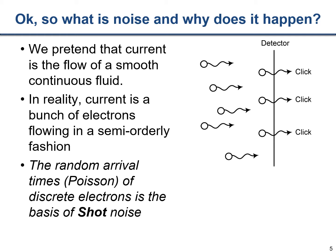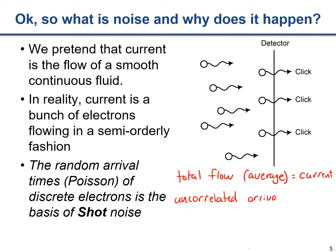It turns out we can model the arrival time of electrons or charged particles crossing the barrier of a circuit element — as measured by a detector — using Poisson statistics. Every time an electron crosses the barrier, there's some probability that this happens, and we model this as Poisson. This is fundamentally the basis for what we call shot noise. The total average flow is what we call the current, and the uncorrelated arrival times of electrons are the noise component — specifically the shot noise component.